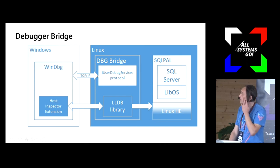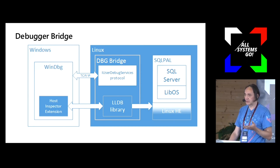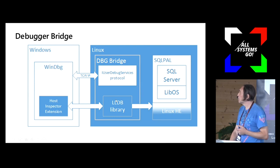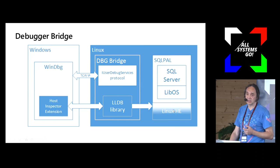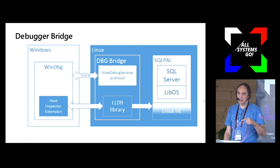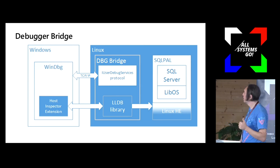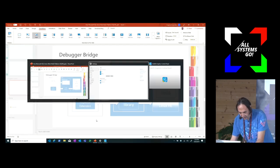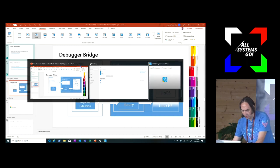WinDBG also has the ability to stop when we load a new module or launch a new thread. To implement this, we put breakpoints in the Linux host extension. Every time a new module is created, we put a breakpoint on that function, and when it hits, we stop execution. Let me quickly show you a demo.